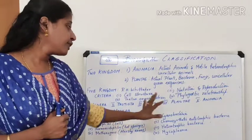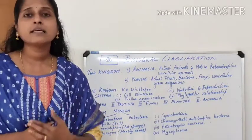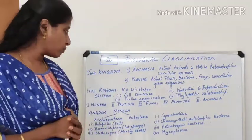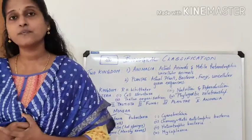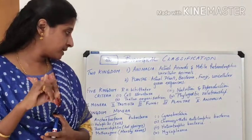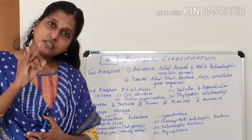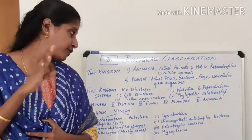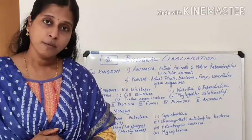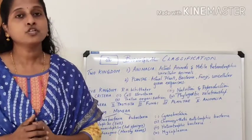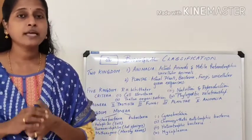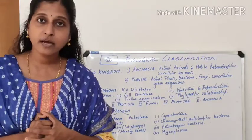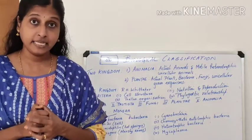The second category is Eubacteria, of which we will learn about four types: Cyanobacteria, chemosynthetic autotrophic bacteria, heterotrophic bacteria, and Mycoplasma. Today we are moving into Kingdom Monera in detail.